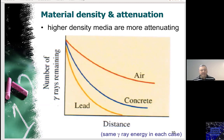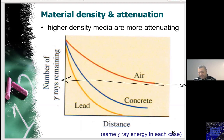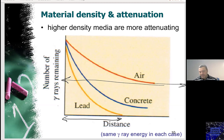Regarding the material: the less dense the material, the deeper the penetration. Lead is far denser than concrete, so penetration in lead is less than in concrete, and less than in air. The range and penetration depth of gamma rays depends on both the energy of the gamma rays and the material they are penetrating through.